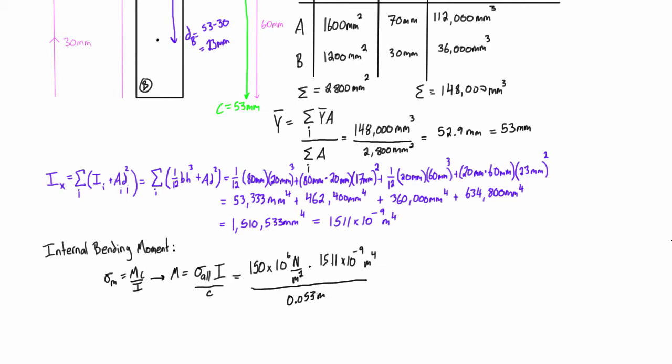All right, so we can cancel out some units here. We got meters squared, meters to the fourth, so we're going to get rid of that and reduce that to meters squared. We have meters down here, so we'll get rid of that and this becomes units of meters. When we calculate this we're actually going to be left with just the units of newton meters, which is good because that's what we're expecting our internal bending moment to be. If you go and crunch that, 150 times 10 to the 6 times 1511 times 10 to the negative 9 divided by 0.053, we end up with a number which is 4276 newton meters.